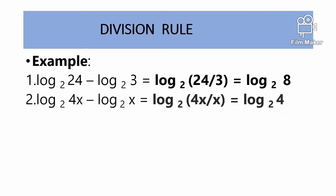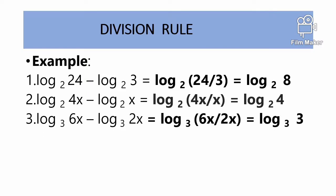Number 2: Logarithm base 2 of 4x minus logarithm base 2 of x equals logarithm base 2 of 4x divided by x, which simplifies to logarithm base 2 of 4. Number 3: Logarithm base 3 of 6x minus logarithm base 3 of 2x equals logarithm base 3 of 6x divided by 2x, which equals logarithm base 3 of 3.